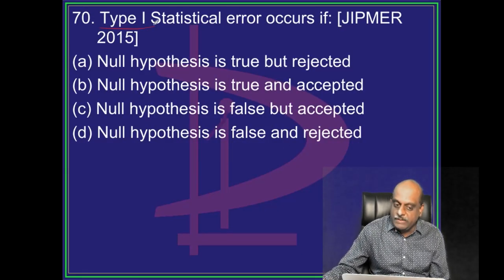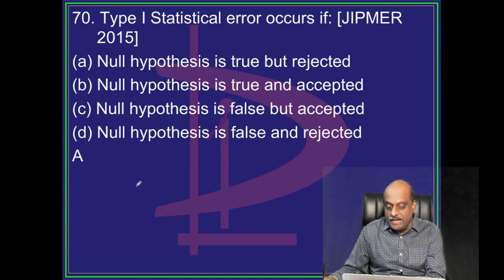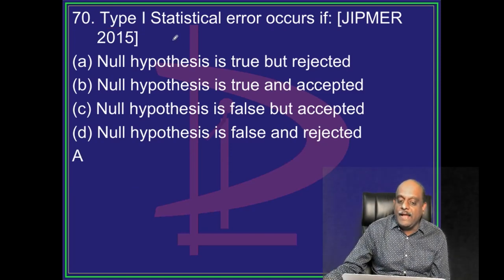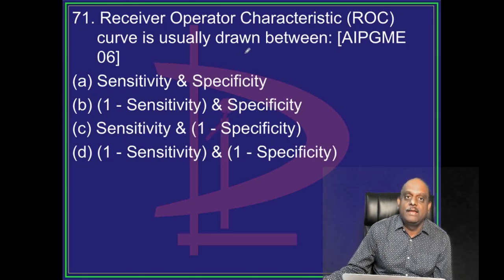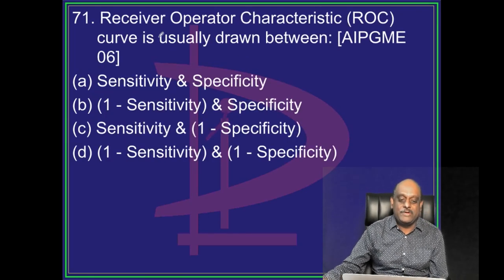Once more same story, type 1 statistical error: the null hypothesis is true, but it is rejected. Now comes an interesting question.